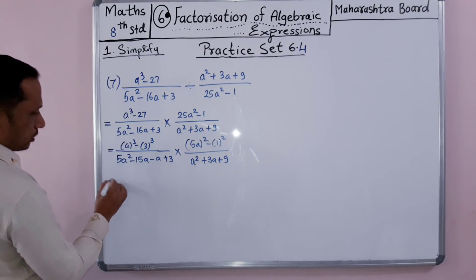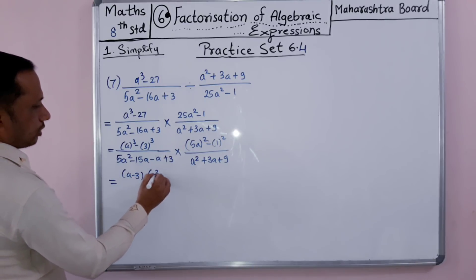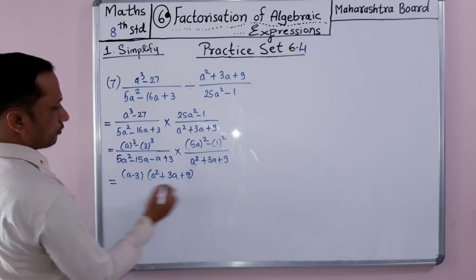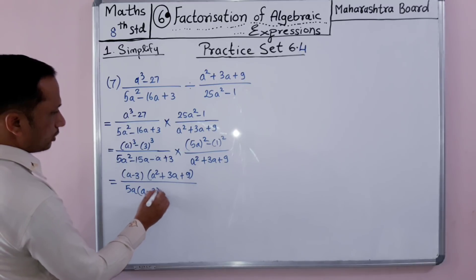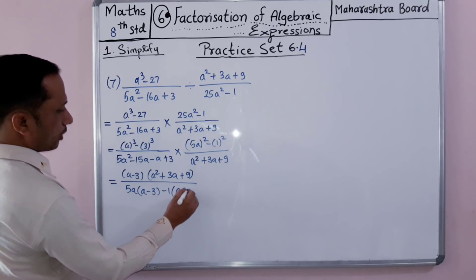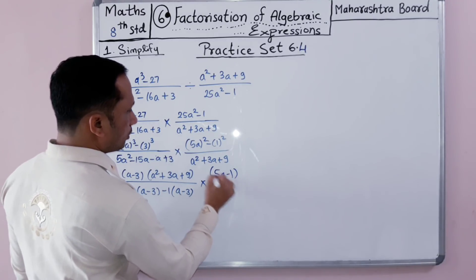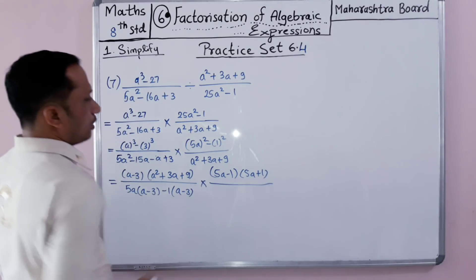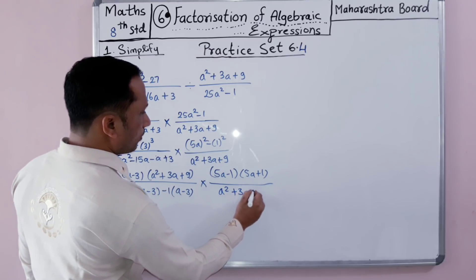Using the a cubed minus b cubed formula, a cubed minus 3 cubed factors as a minus 3 times a squared plus 3a plus 9. Factoring 5a squared minus 15a minus a plus 3: take 5a out giving a minus 3, and minus 1 out giving a minus 3 as well, so the factors are 5a minus 1 and a minus 3. The expression 5a squared minus 1 squared factors as 5a minus 1 times 5a plus 1. The expression a squared plus 3a plus 9 remains as is.